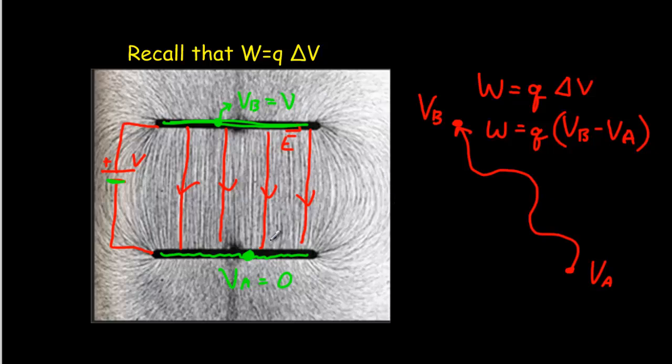And so the amount of work that would be needed to be done to move our positive charge against the field and get it to the other plate, taking any path, is going to be this expression here again.